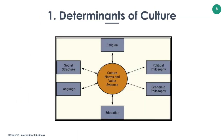The values and norms of a culture do not emerge fully formed. They evolve over time in response to a number of factors, including prevalent political and economic philosophies, the social structure of a society, and the dominant religion, language, and education, as shown in this image. However, political and economic philosophy will be discussed in our next topic.